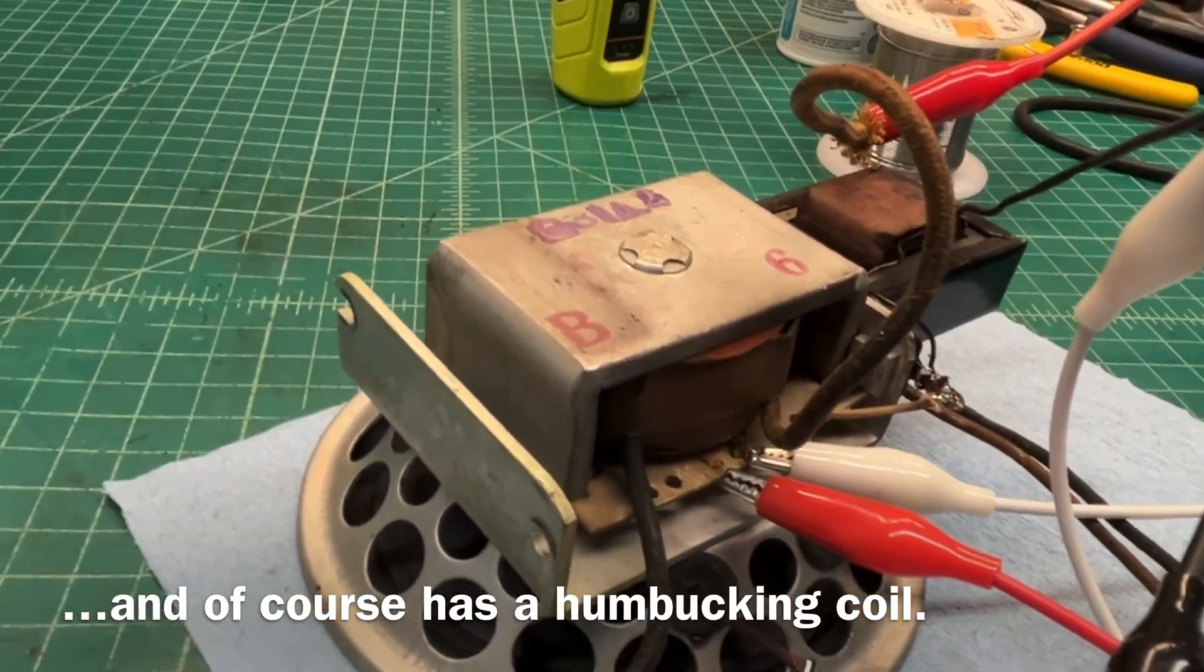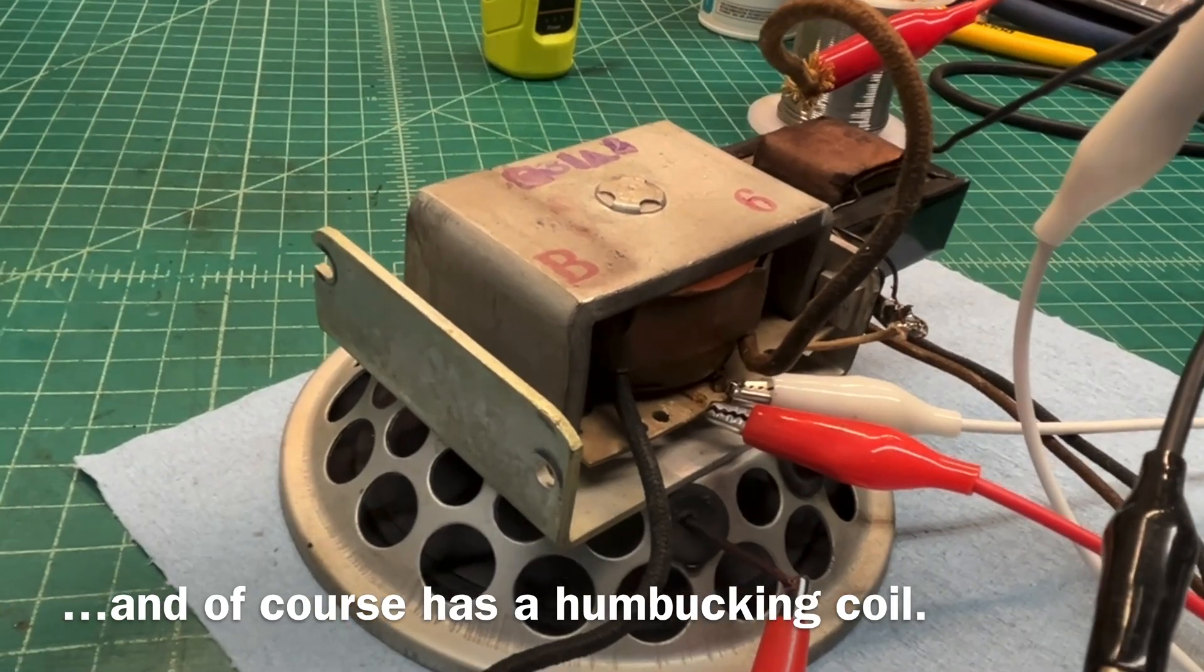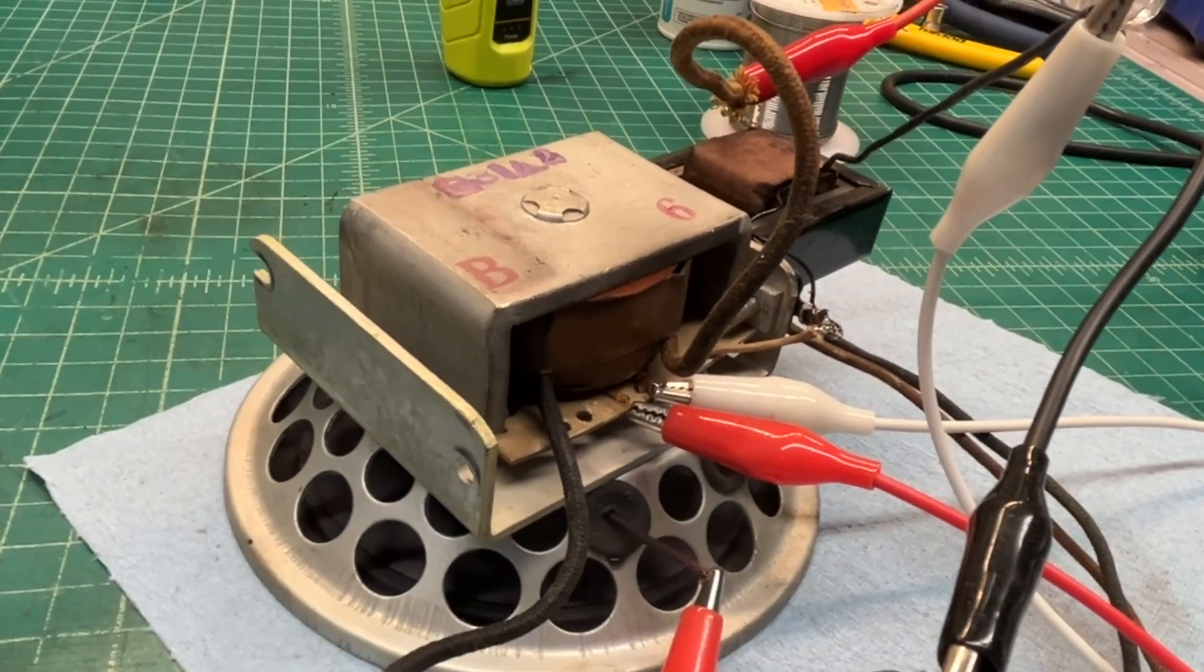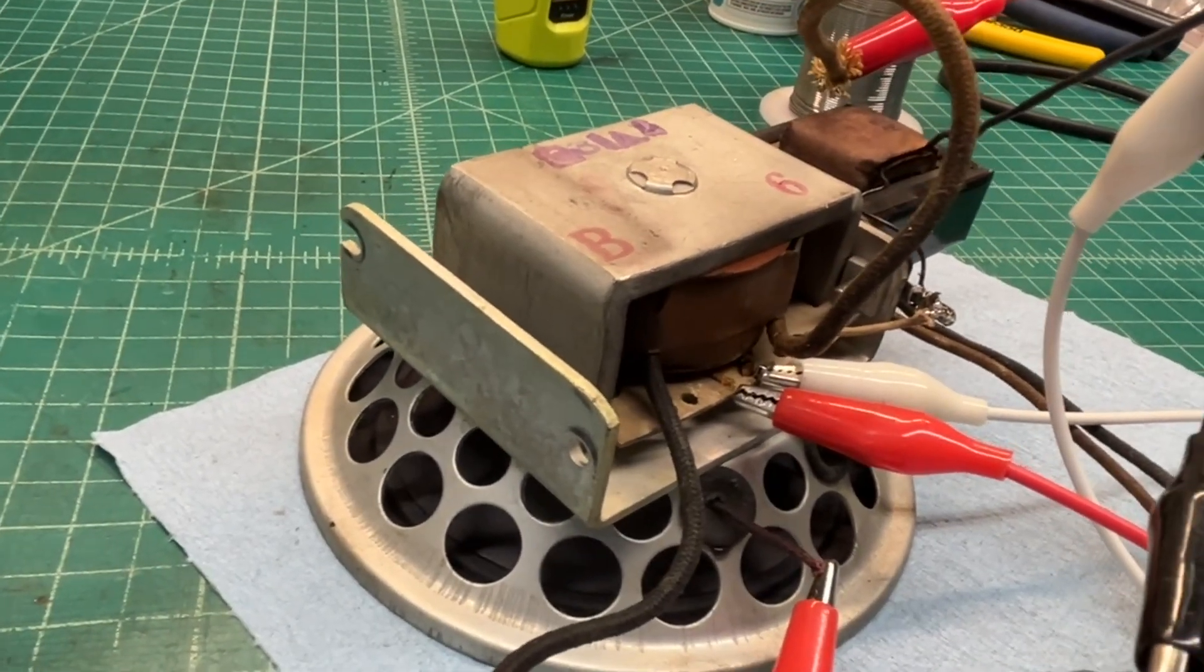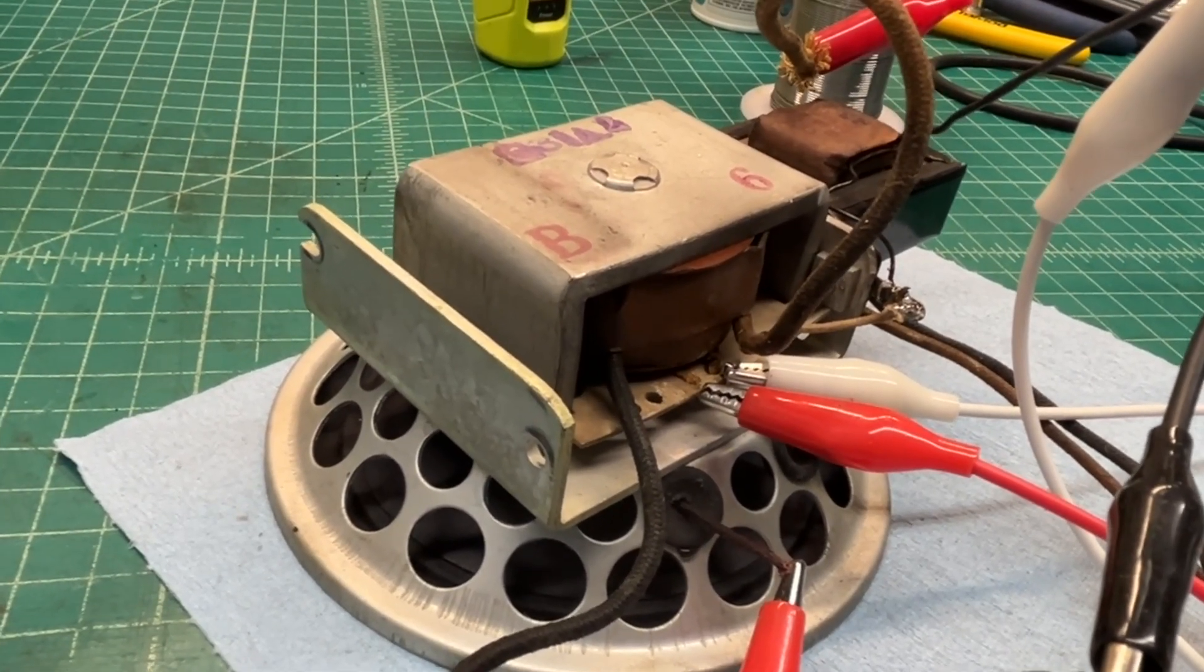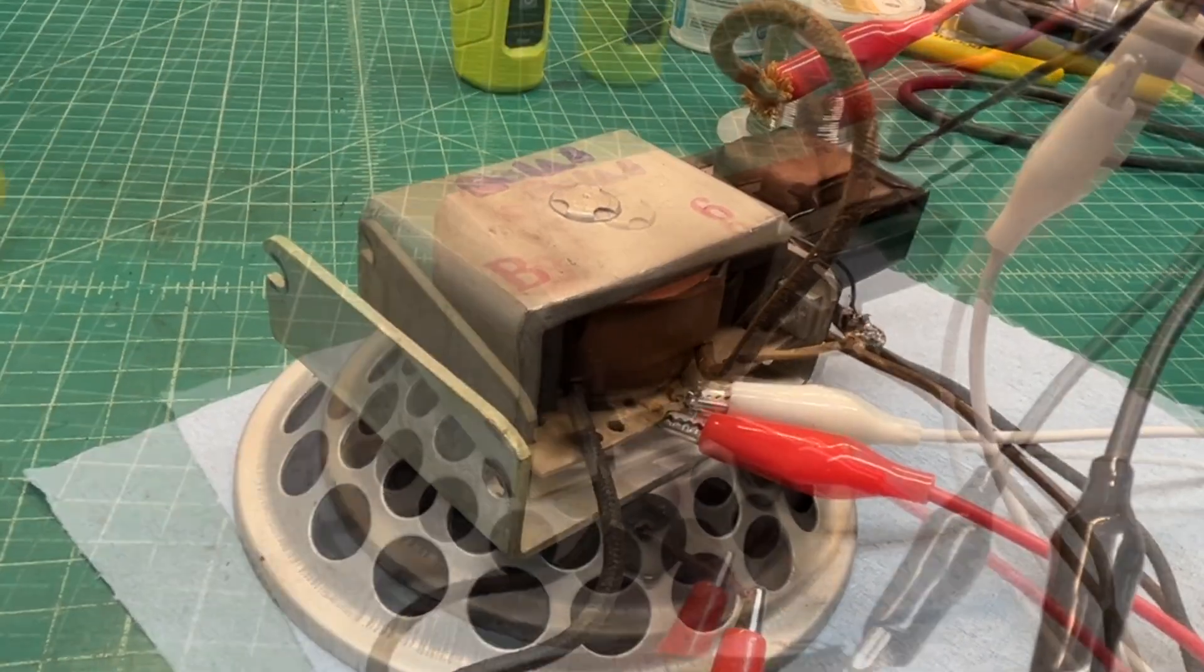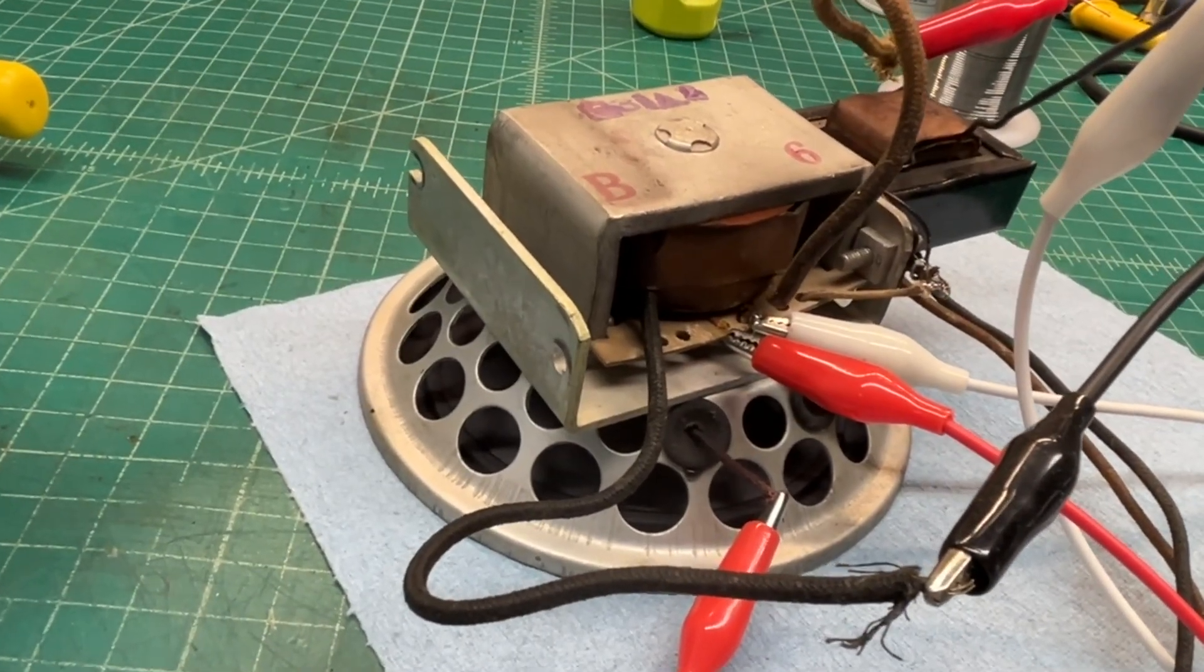If you ever break down a loudspeaker that has an output transformer and you're not really sure about how it should be hooked up, the idea is to have the humbucking coil out of phase with the voice coil. So this would be my correct configuration.